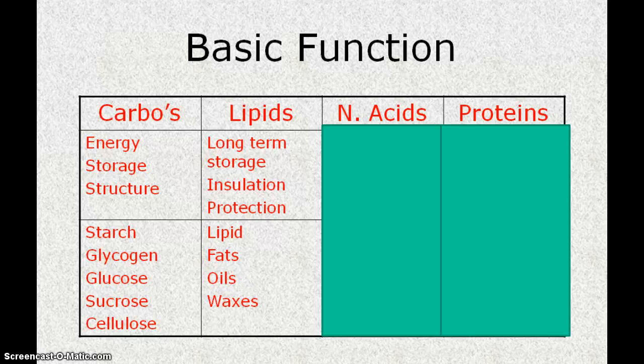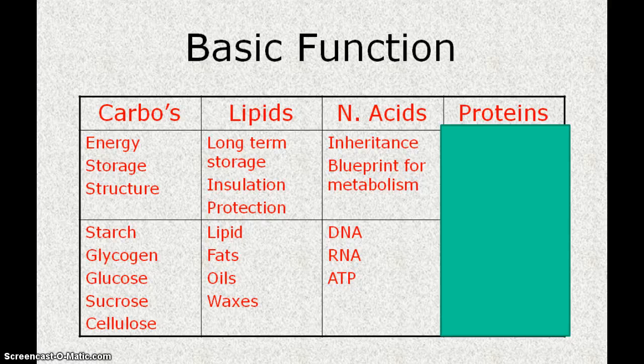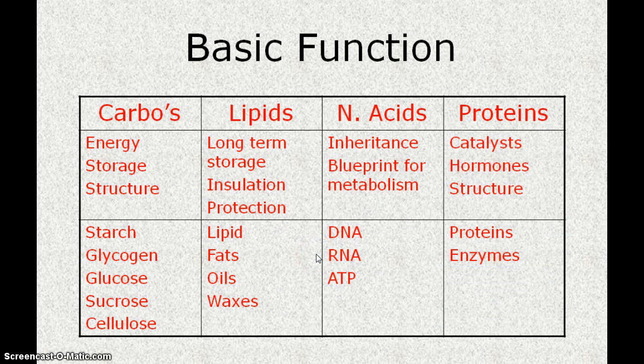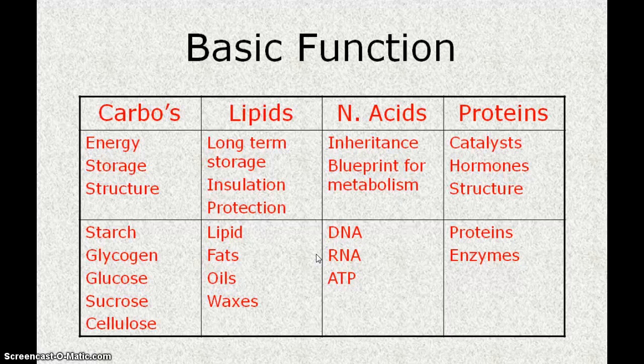Nucleic acids are the blueprint for our inheritance. They make up our RNA which helps our bodies make the right proteins. And finally, proteins can serve as catalysts for all sorts of chemical reactions in our body. They are hormones and they make up a lot of the structure in our body.